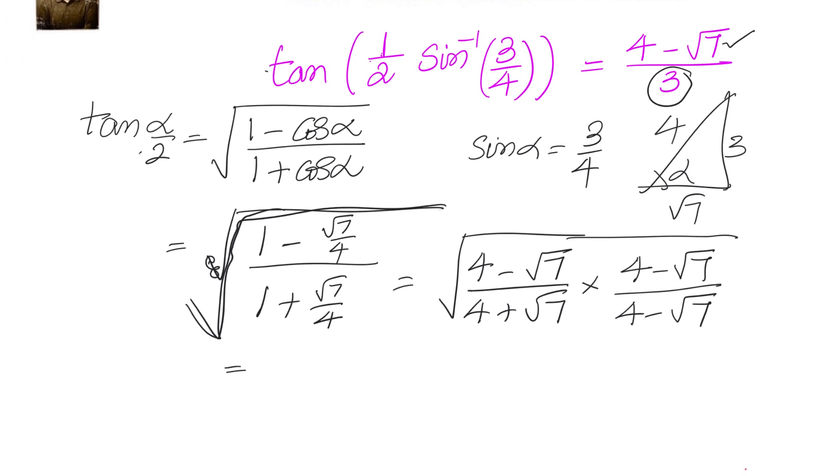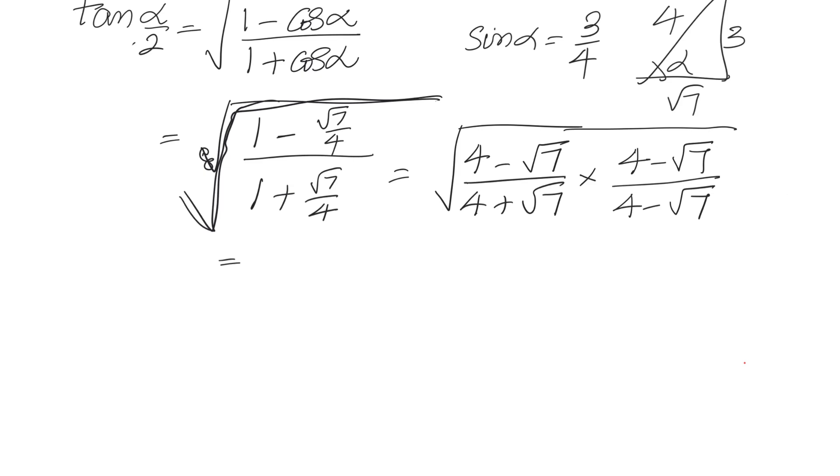The numerator becomes four minus root seven whole squared, which equals four minus root seven divided by the square root of nine.